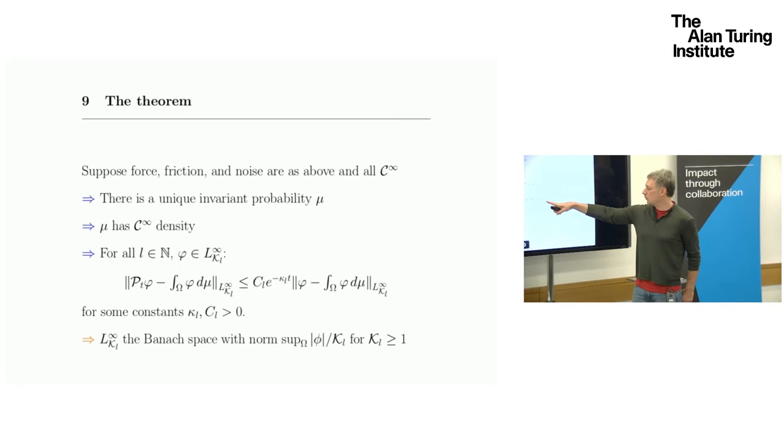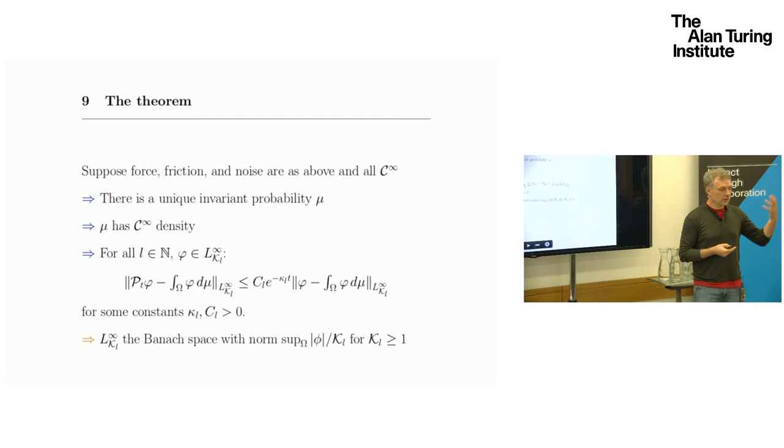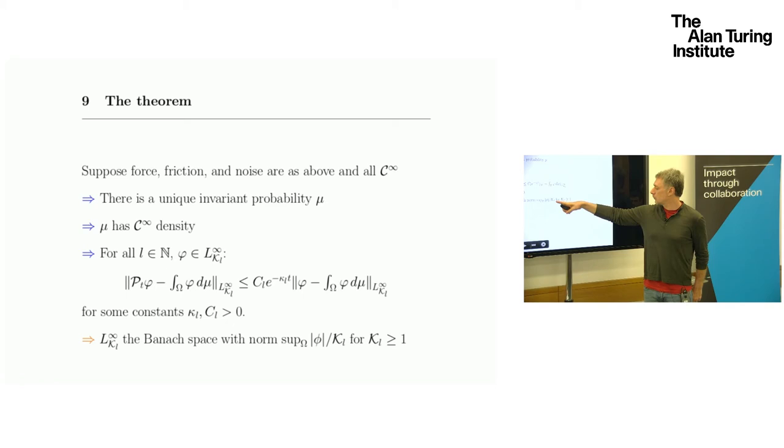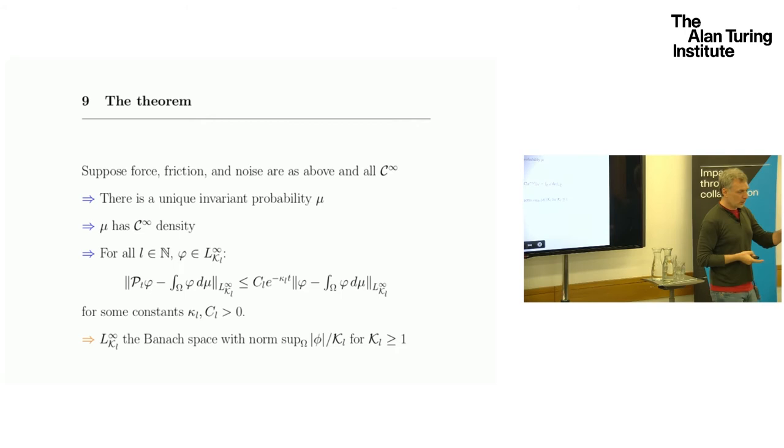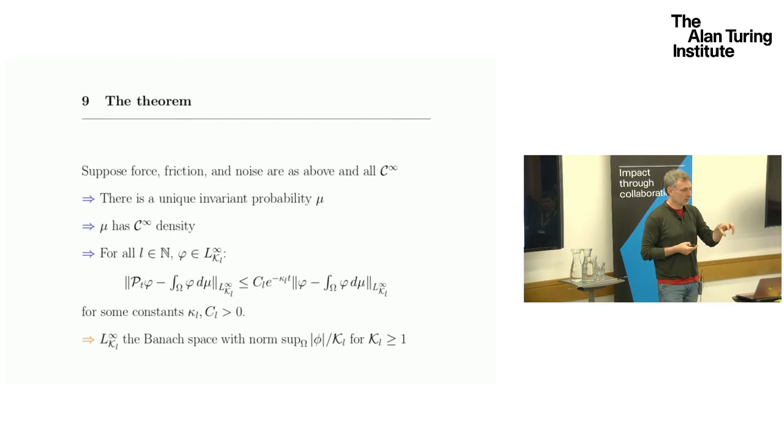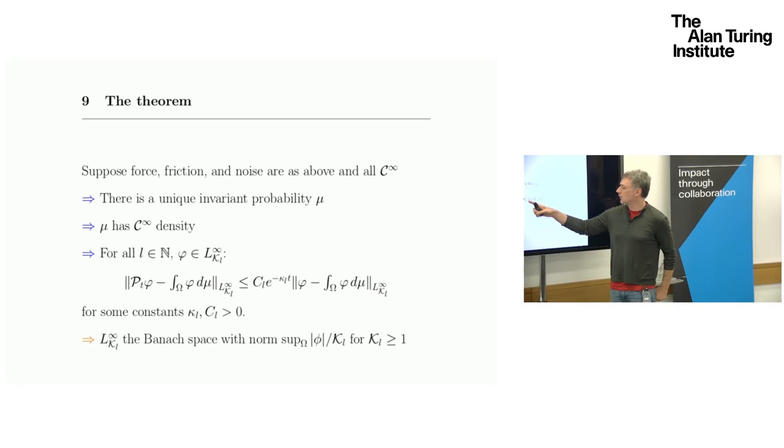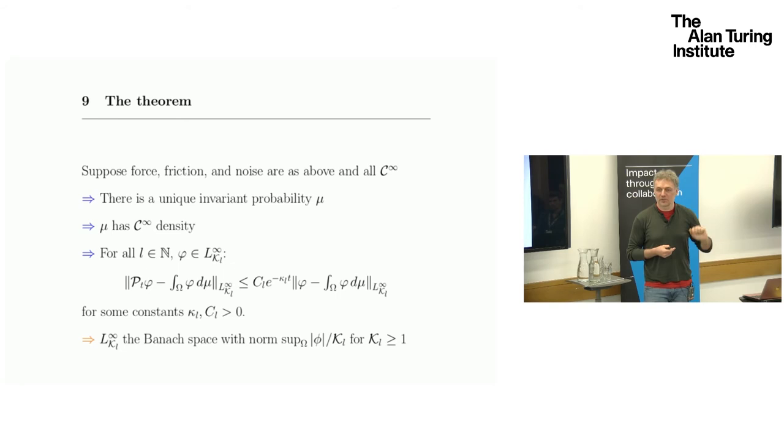What is this Banach space? It's a Banach space where you have a control function, a kind of a scale function. You can think of it as a polynomial in Q and P, or even just in P in some simple case. The idea is that you are only looking at observables that are negligible or about the same magnitude as that scaling function. They are bounded by this K_L.